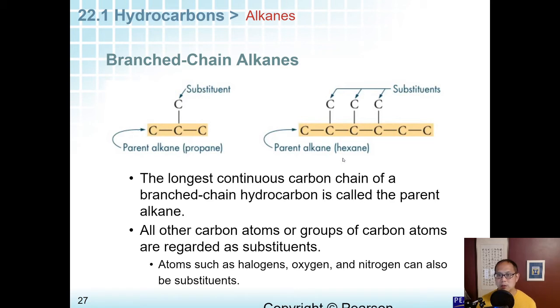The longest continuous carbon chain of a branched chain hydrocarbon is what's called the parent alkane. You're going to have to actually count the carbons because it doesn't always look like a straight line, and then everything else is considered a substituent. Eventually we'll get to it, but halogens, oxygen, nitrogen, other things can be substituents, but we're only going to deal with carbons for today.